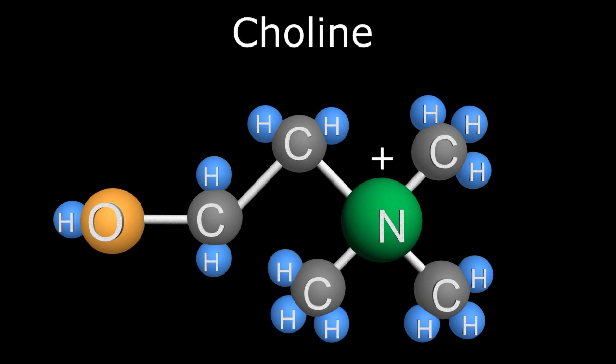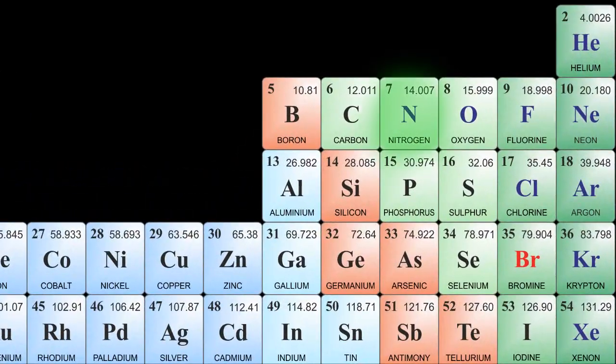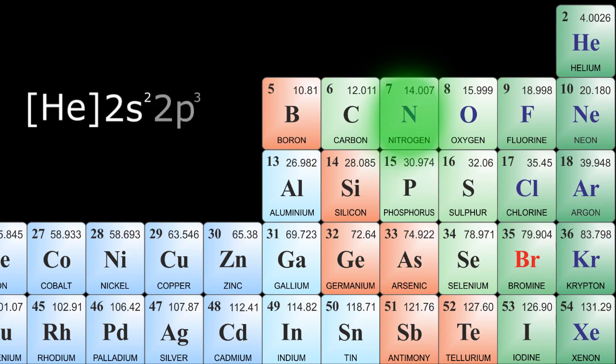For the purposes of this presentation, we will use the element nitrogen. Located on the right side of the periodic table in between carbon and oxygen, nitrogen's electron configuration is helium 2s2 2p3.